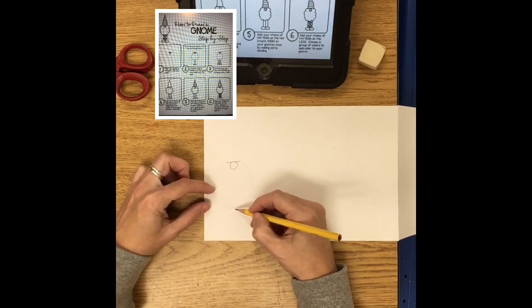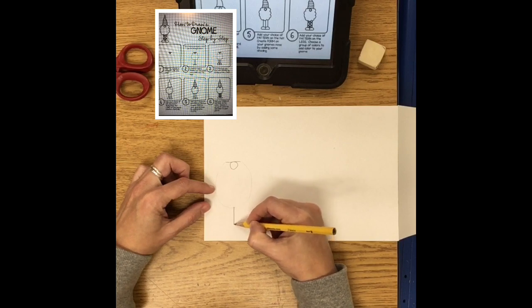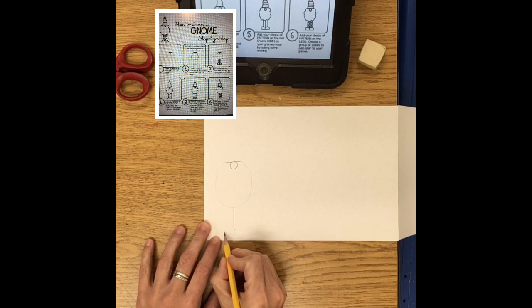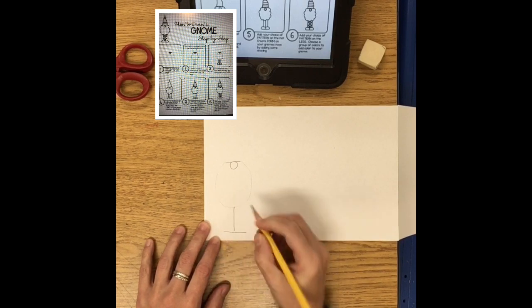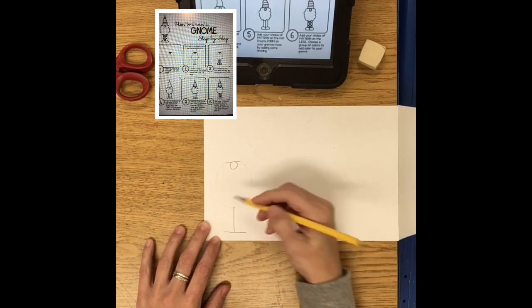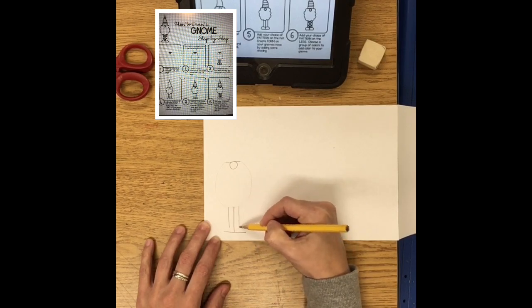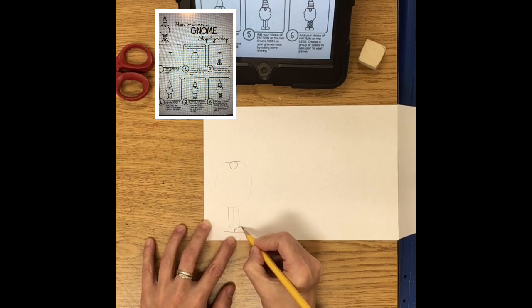So I drew that really lightly because the beard shape is going to change and then the legs are just a straight line down and then a straight line across and then you're going to turn those into his little legs by making a line down and a line down and then the feet are just little bumps that come up like that.